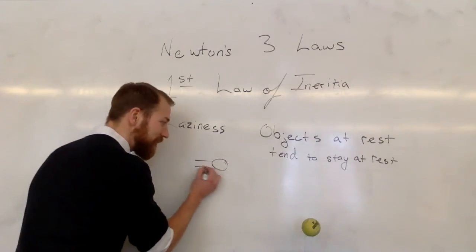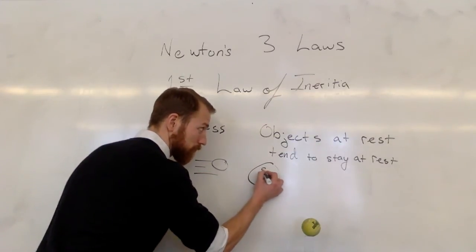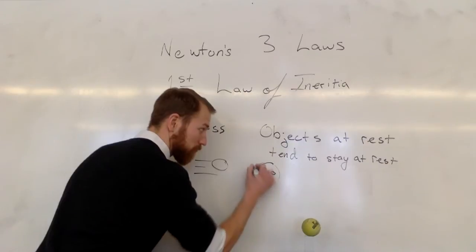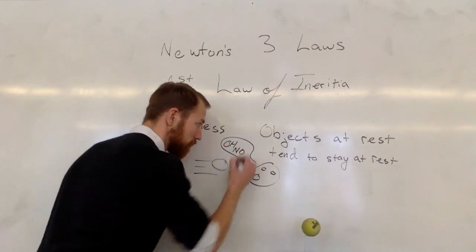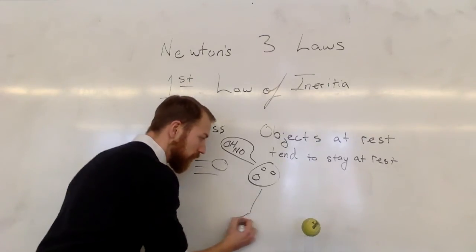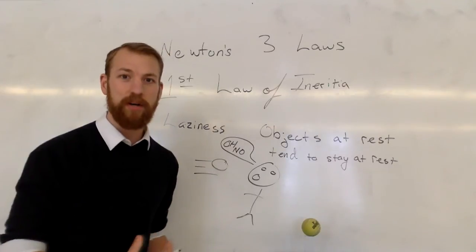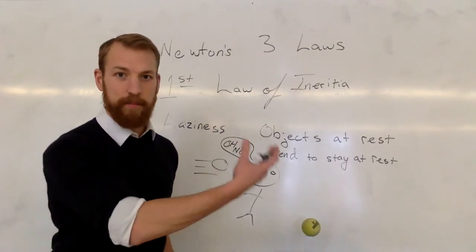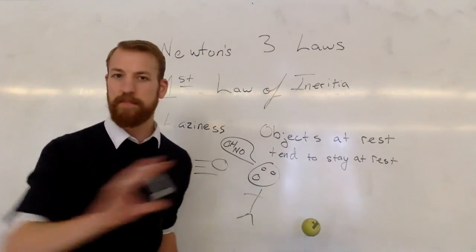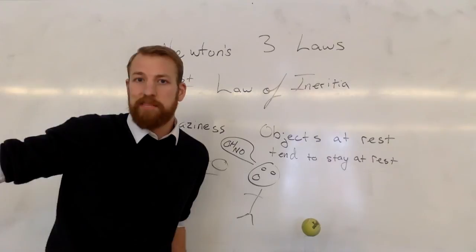So if we have that tennis ball careening in towards my face, the reason why it hurts is because my face has to apply some force to that tennis ball to actually get it to stop moving. If we were in outer space and that tennis ball had missed me, that tennis ball would go on forever. There's nothing out there to stop that tennis ball from moving. So that's the laziness of objects that are in motion.